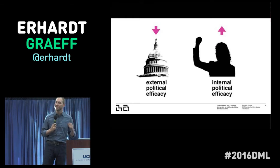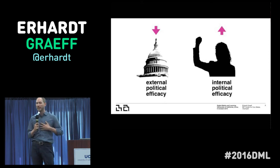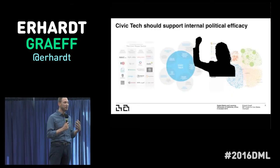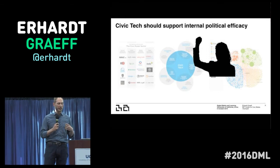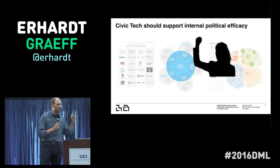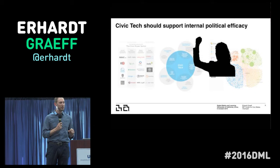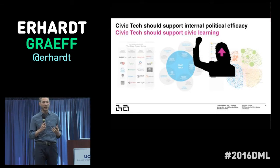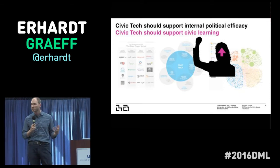However, in order to sustain engagement, it's important that we think about internal political efficacy. This is our sense of our ability to do some work — our sense that we have the knowledge, skills, abilities, and the platforms necessary to do great civic work. So we should be thinking about how we're designing for that. And if we're designing for internal political efficacy, we're also designing for civic learning, because that's the kind of outcome we expect from learning and education that promotes these kinds of civic practices.